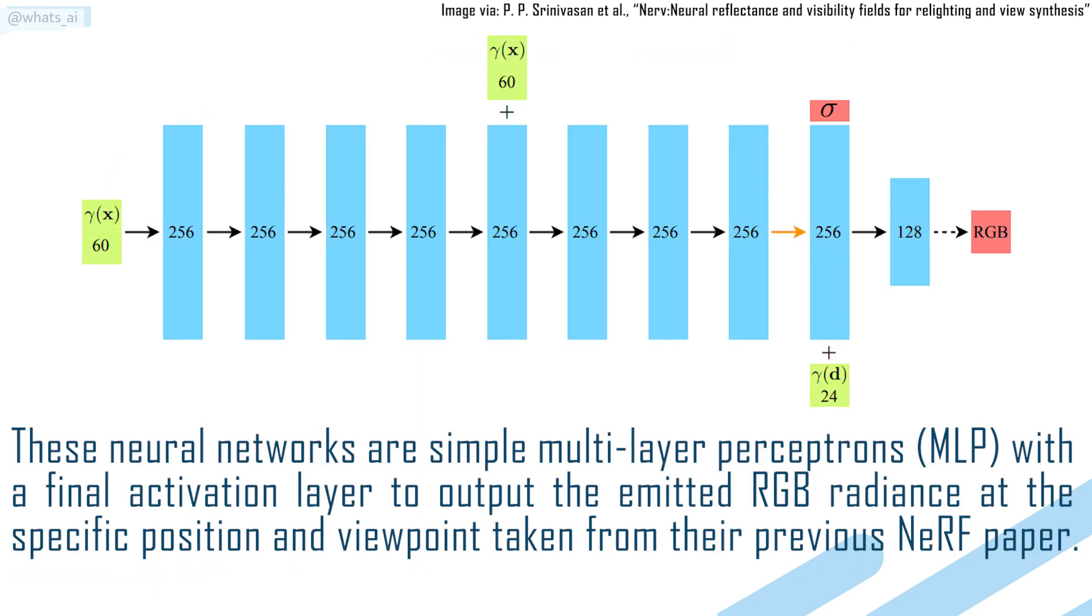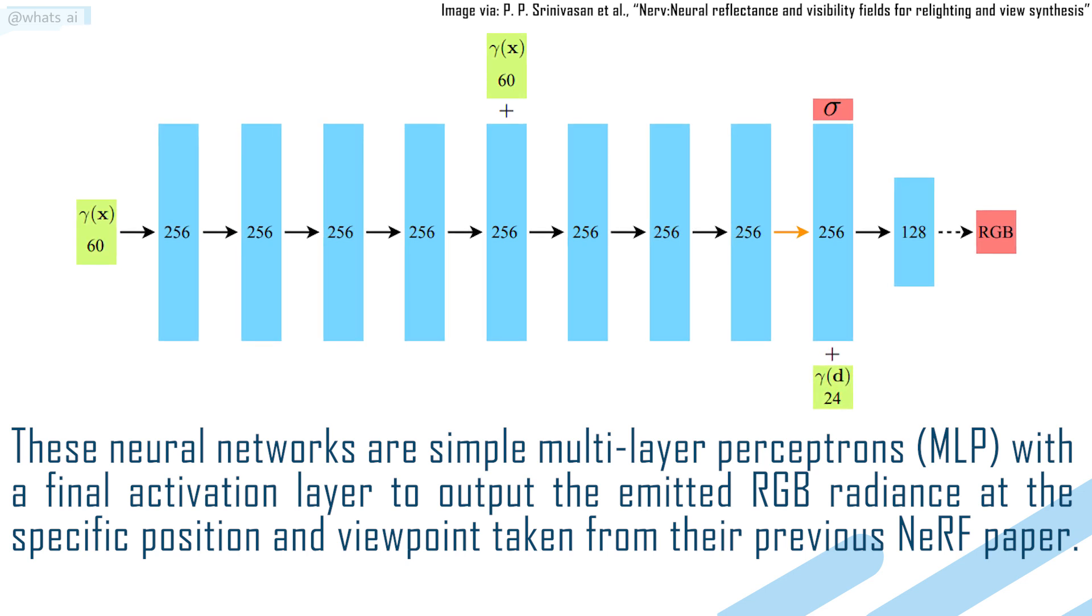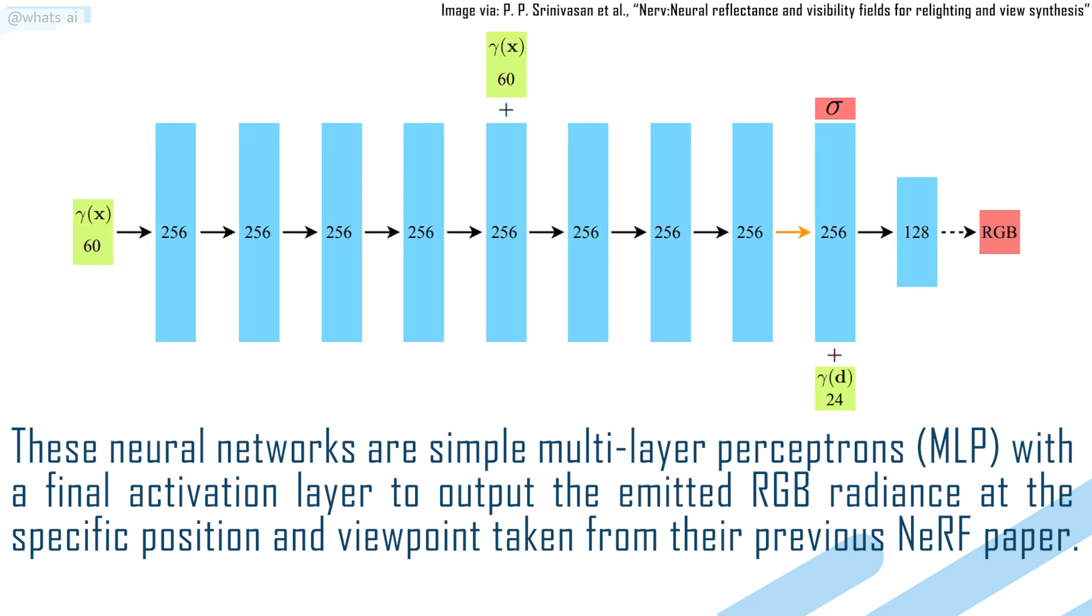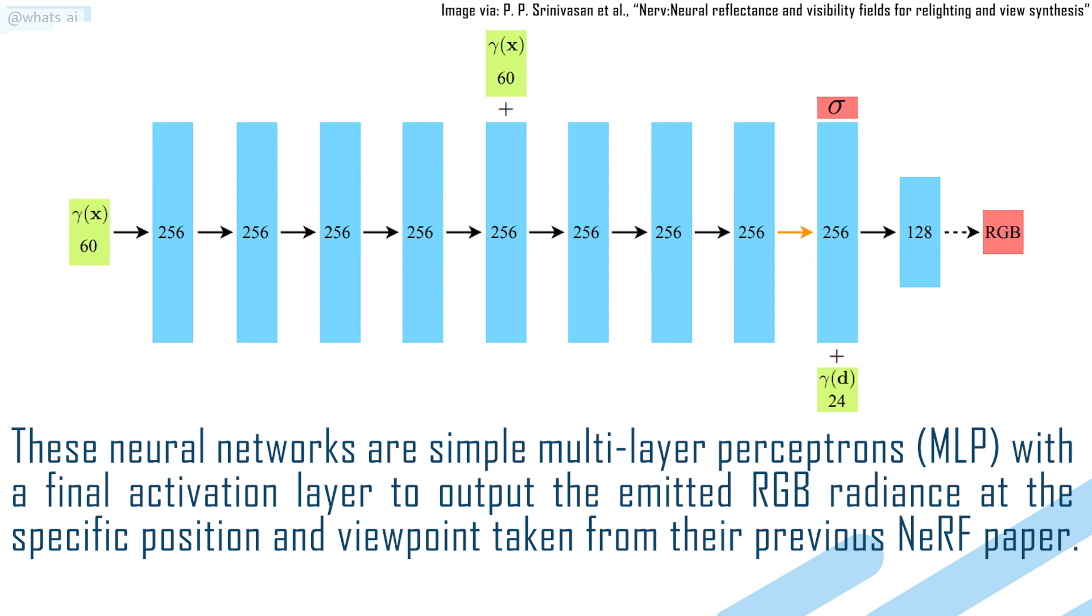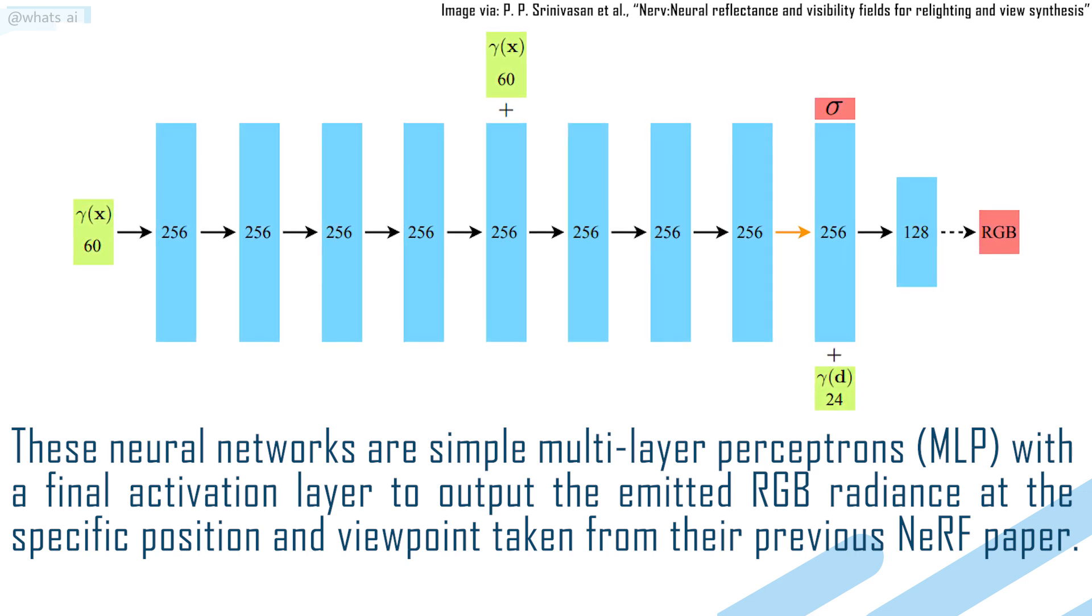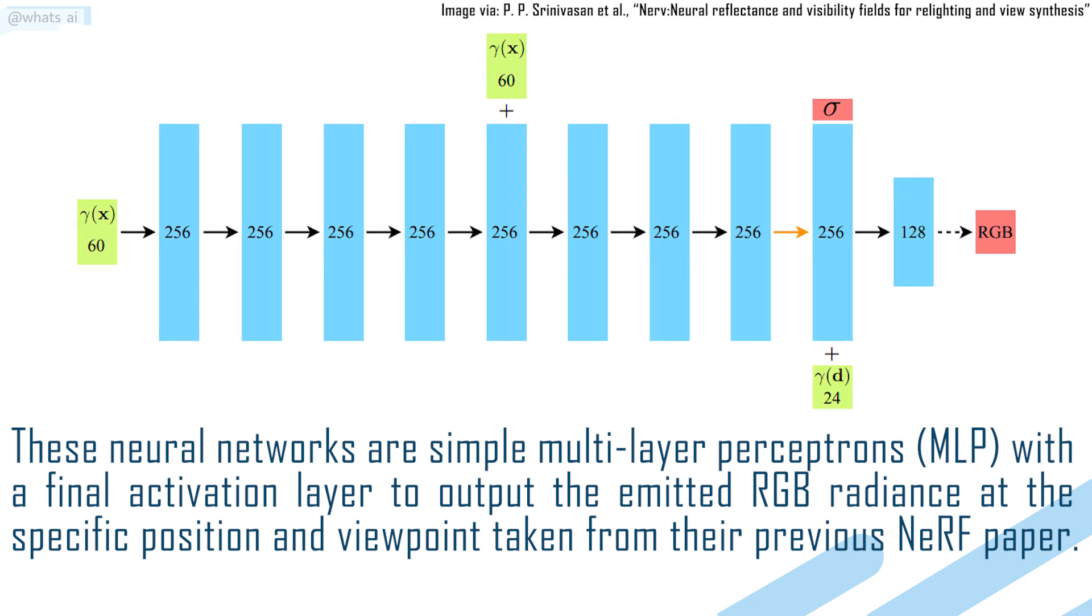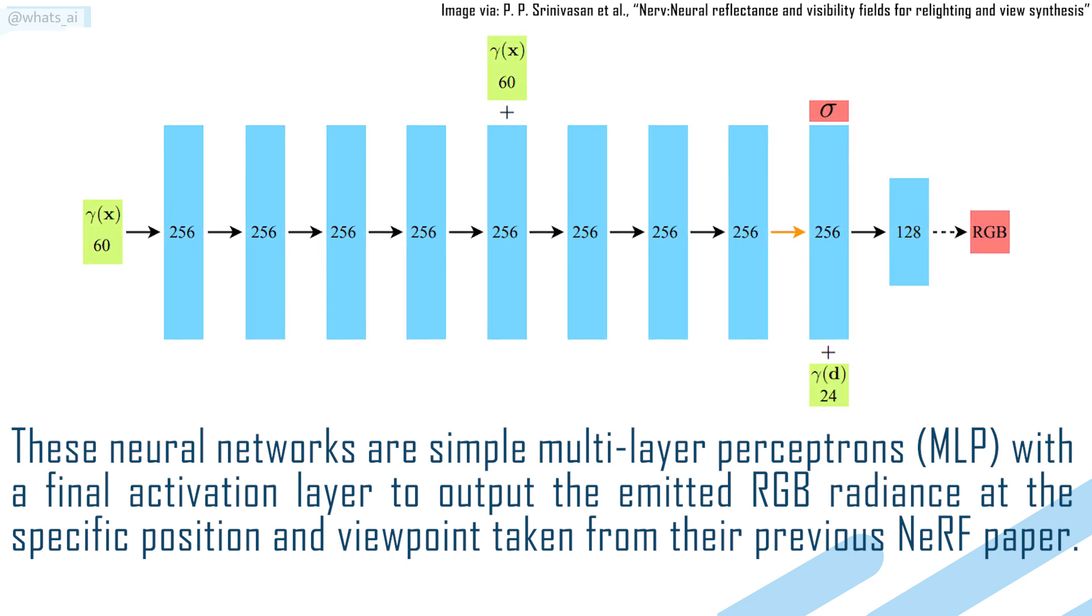These neural networks are simple multi-layer perceptrons, also referred to as MLP, with a final activation layer to output the emitted RGB radiance at the specific location and viewpoint taken from their previous NeRF paper.